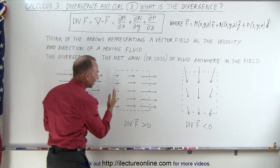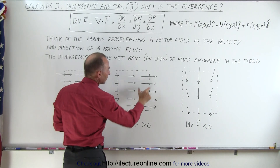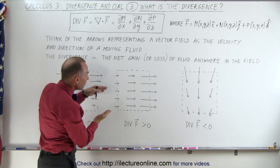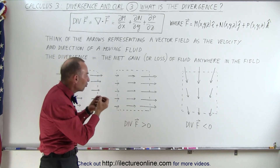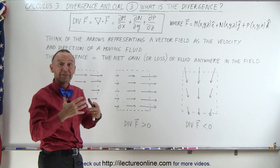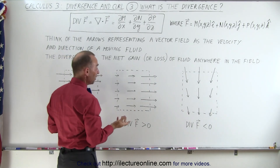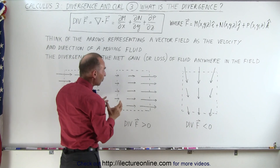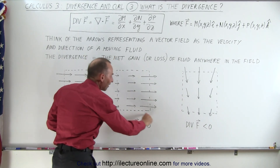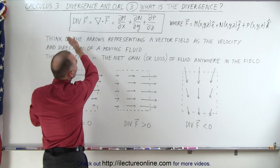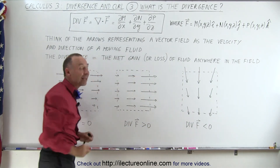But here we have a case where the vector field increases as we go in the positive x direction. The arrows going into the box have a much smaller length than the arrows coming out of the box. It appears as though the box magically generates more fluid — more comes out than goes in. As we shrink the box, this still holds true. If more comes out than goes in, then the divergence has a positive value. So if the divergence is greater than zero, that means more comes out than goes into the box anywhere inside that vector field.